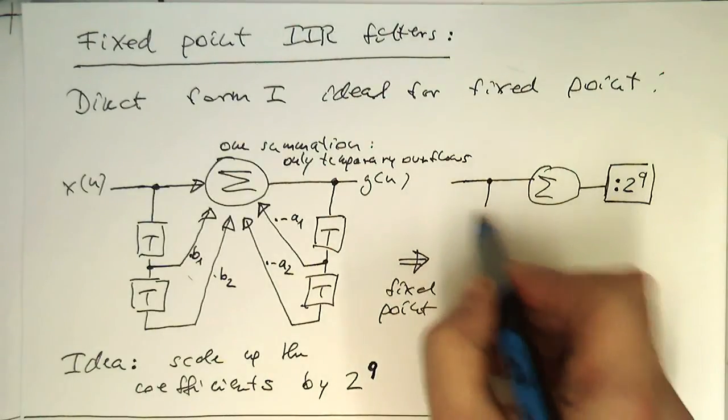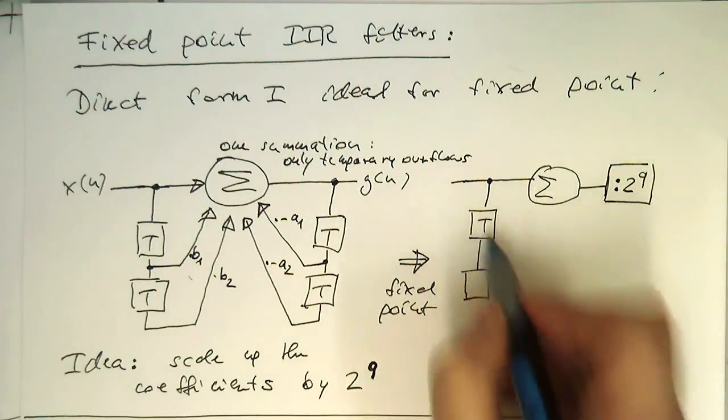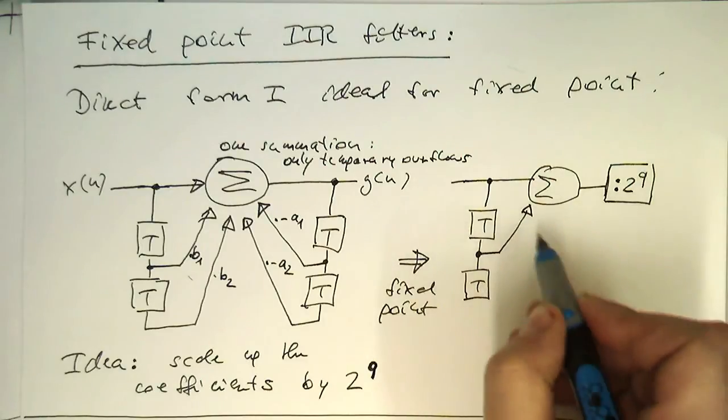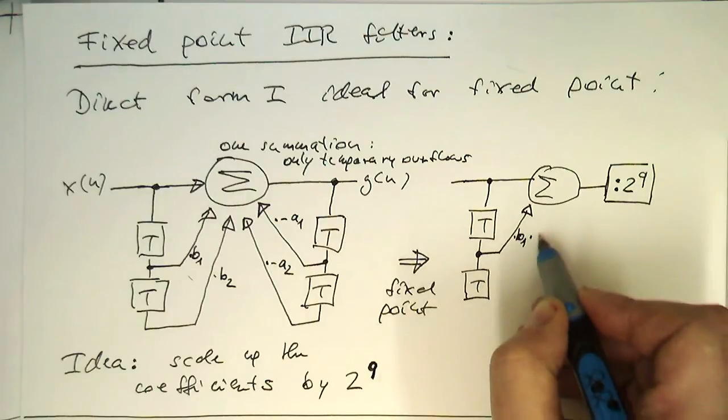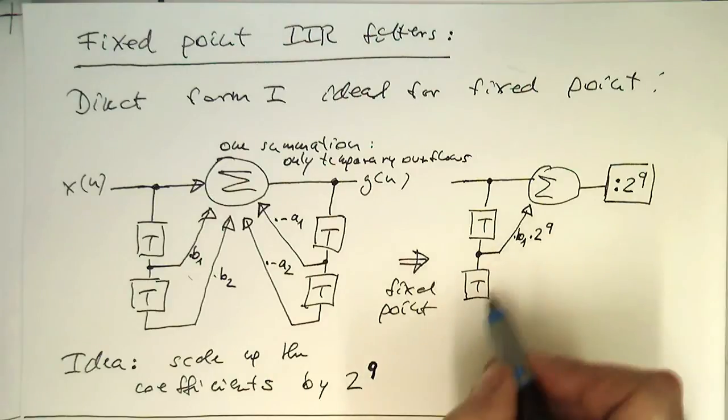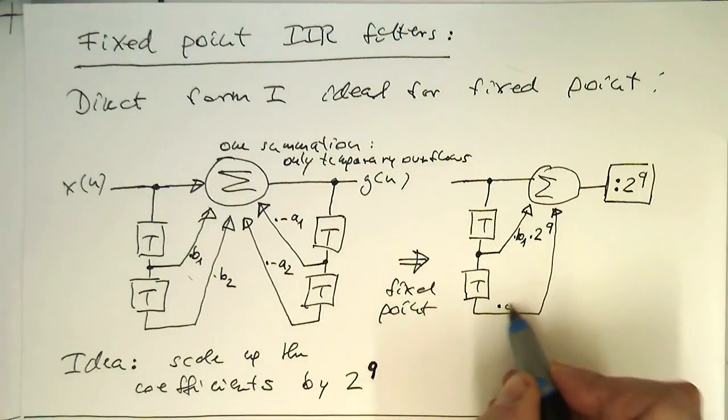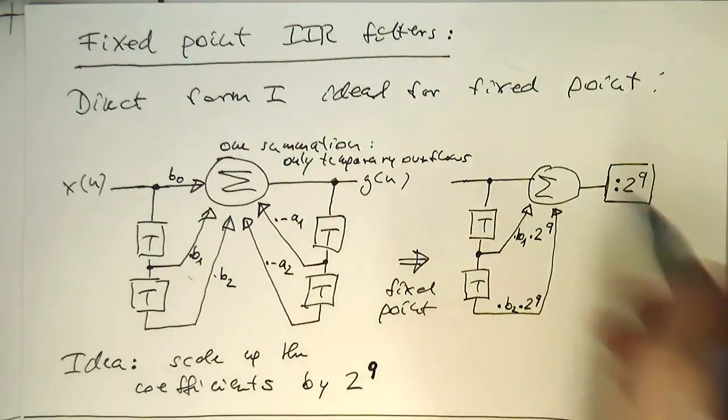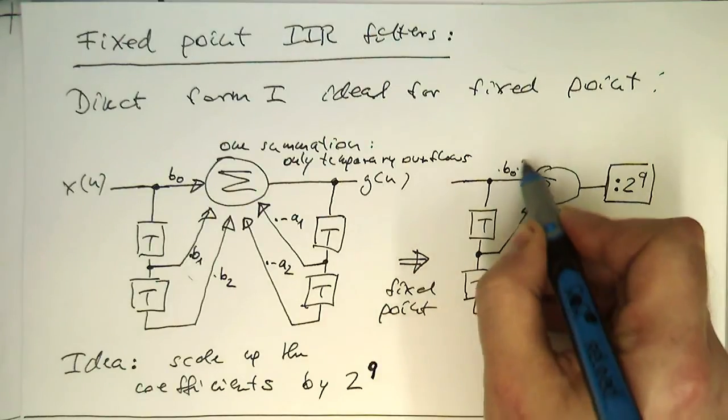And so what we do here is we have our delay line again, so our input here. We have our coefficient here, b1 multiplied by b1, but this is also multiplied by 2 to the 2q. And then we do the same also with the other one, so that's multiplied by b2, also multiplied by 2 to the 2q. And I've forgotten here the b0 coefficient, so we've got also here the b0 coefficient multiplied by 2 to the 2q.